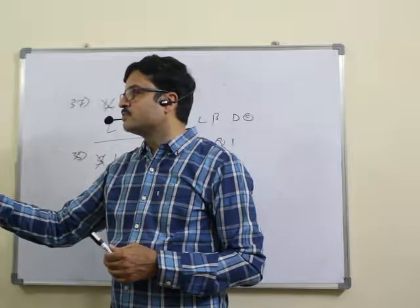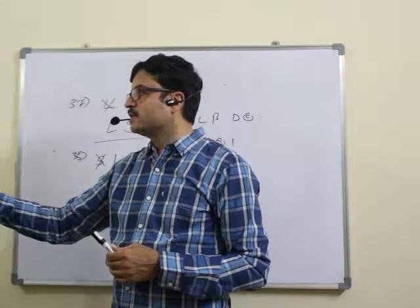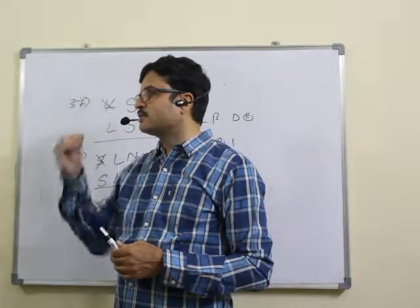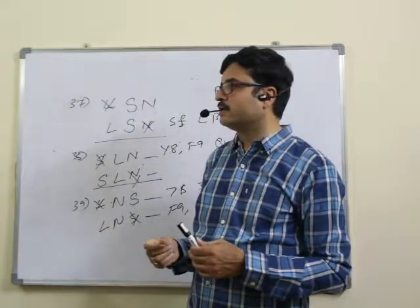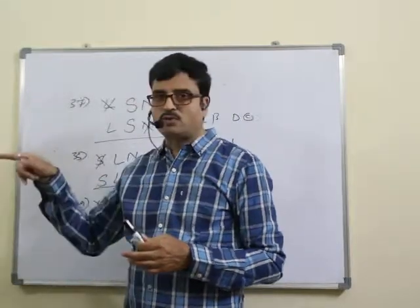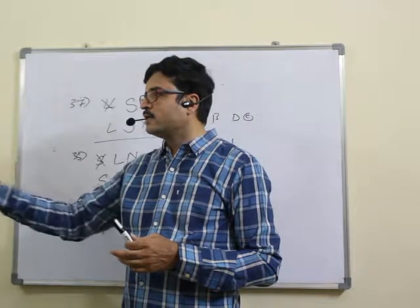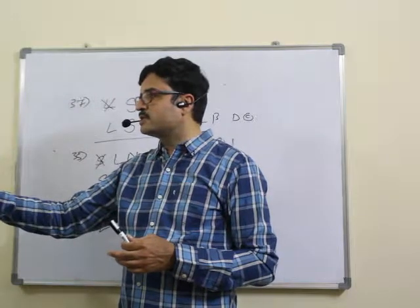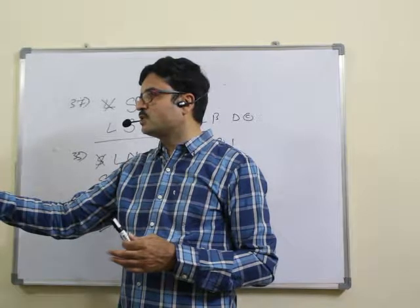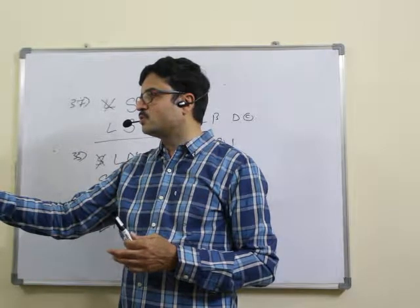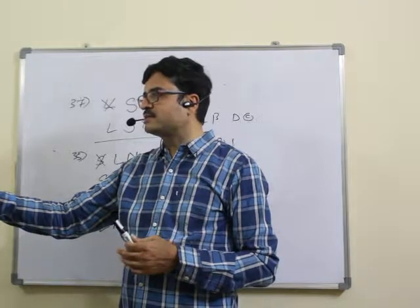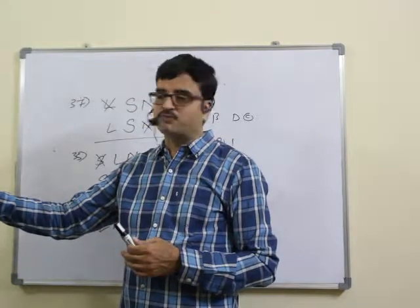Question 43: B greater than N and L greater than T definitely true. Given B, L, O, N, D. Based on that: first, second, third options ruled out. Fourth option also ruled out based on the last symbol. Answer: 43, fifth option. Remember this elimination technique.